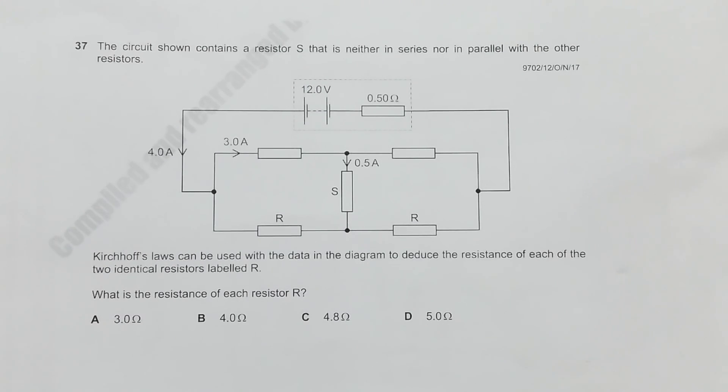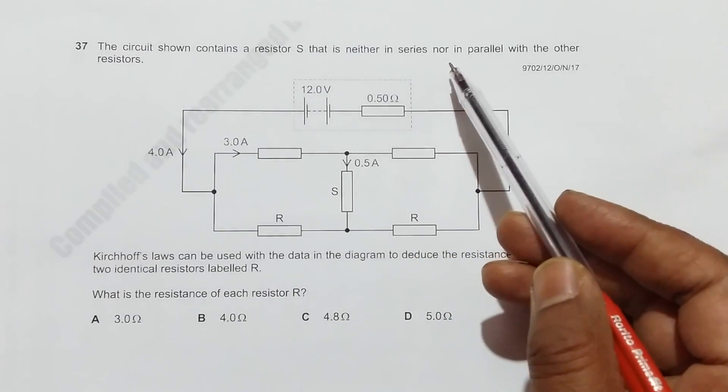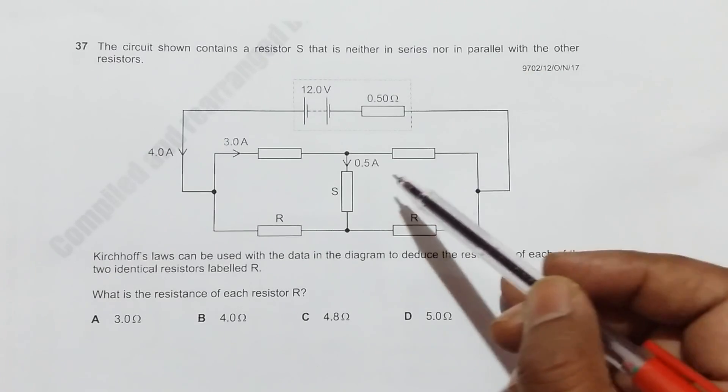This is question 37 from the 2017 October November Paper 1. It concerns a Wheatstone bridge that has a resistor which is neither in series nor in parallel with the other resistors.